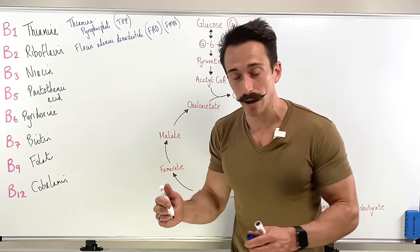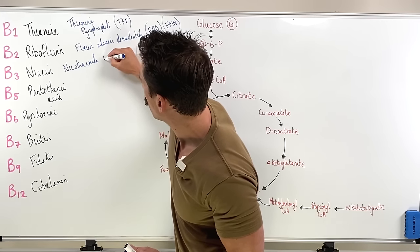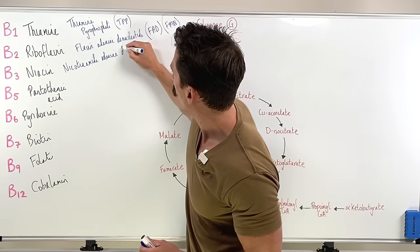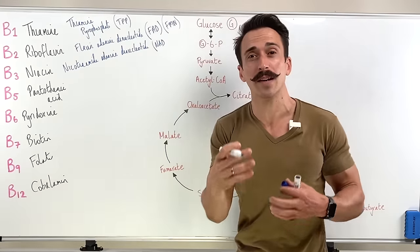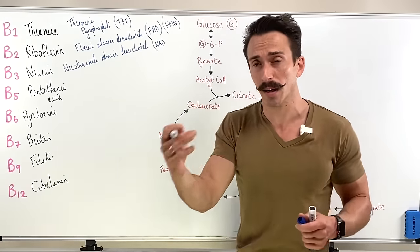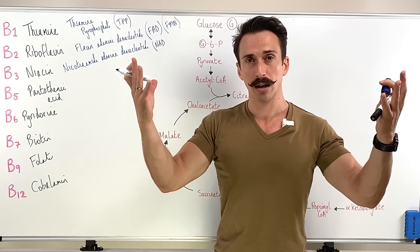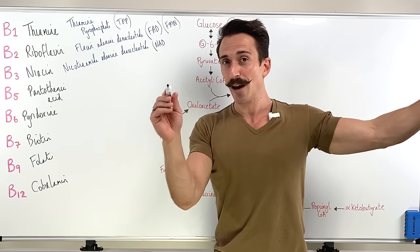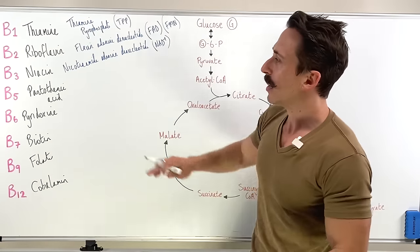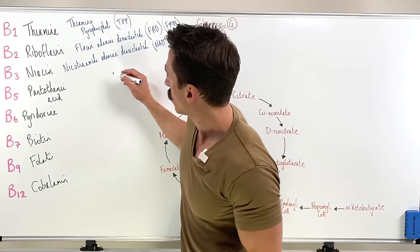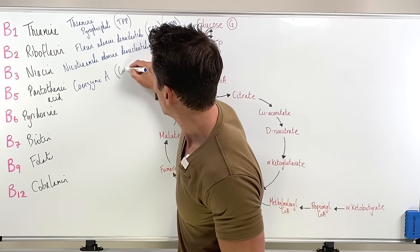The niacin active forms produce the nicotinamides, which include nicotinamide adenine dinucleotide — NAD. It works in its oxidized form, NAD+. Remember, oxidized means it's lost an electron. LEO: lost an electron is oxidation. So NAD+ is functional in its oxidized form because it's lost an electron. Pantothenic acid works basically as coenzyme A, often written as CoA.